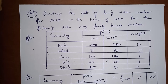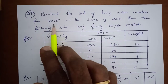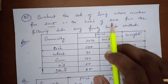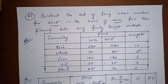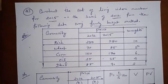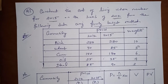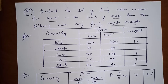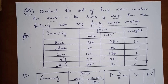Exercise 9.2, Sum Number 21. Construct the cost of living index number for the year 2015 on the basis of 2012 from the following data, using the family budget method. In the family budget method we have to apply the cost of living index number formula, and in this problem we have to consider two years. The first year is 2012, which is the base year, and the next year is 2015, which is the current year.